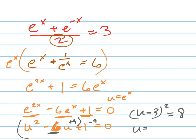So now u equals, u minus 3 equals plus or minus the square root of 8. The square root of 8, I got rid of the square. And now add 3 to both sides.